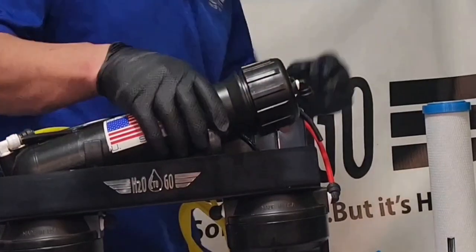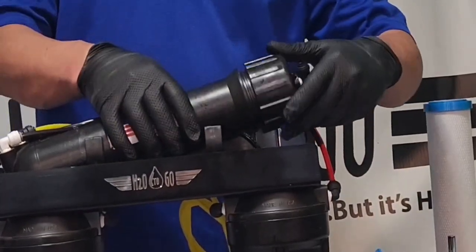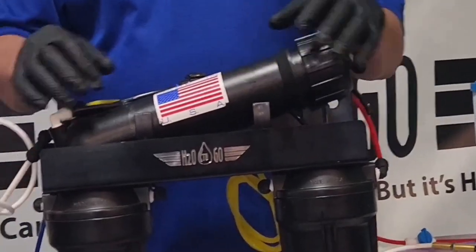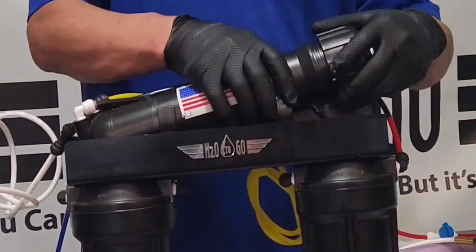And screw it this way. This is the lefty-loosey-righty-tighty. So it's like this. Sometimes, I have to disconnect these tubes, get it down on the ground, and just bear down on it.